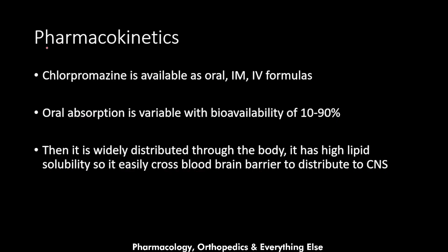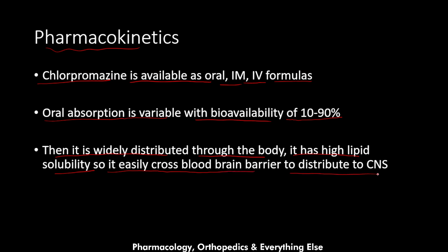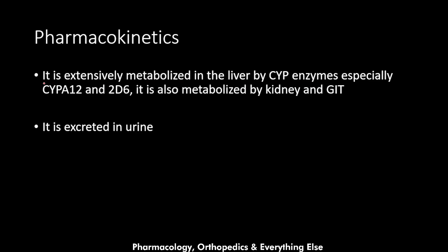Regarding the pharmacokinetics of this medication: chlorpromazine is available as oral, intramuscular, and intravenous formulas. Oral absorption is variable with a bioavailability of 10 to 90%. It is widely distributed through the body and has high lipid solubility, so it easily crosses the blood-brain barrier to reach the CNS. It is extensively metabolized in the liver by cytochrome P450 enzymes, especially CYP1A2 and CYP2D6, and also metabolized by the kidney and gastrointestinal tract. It is excreted mainly in urine.